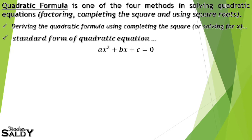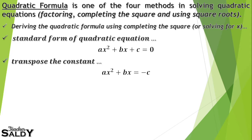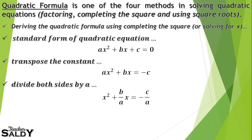We derive the quadratic formula using completing the square, solving for x. The standard form of a quadratic equation is ax² + bx + c = 0. We transpose the constant to get ax² + bx = -c, then divide both sides by a to get x² + (b/a)x = -c/a.